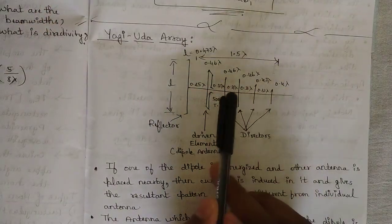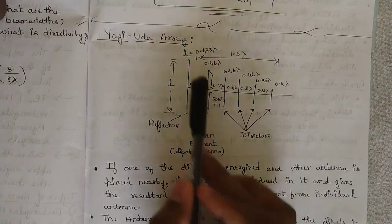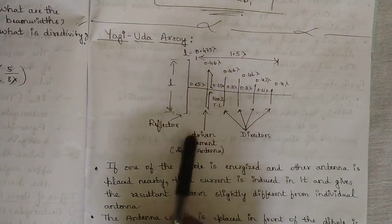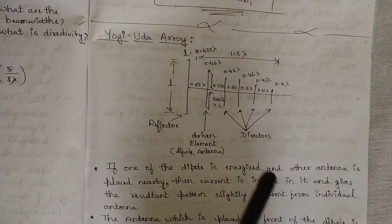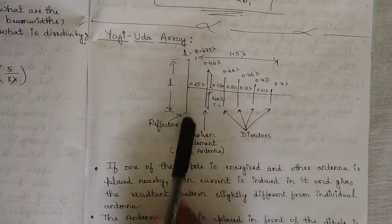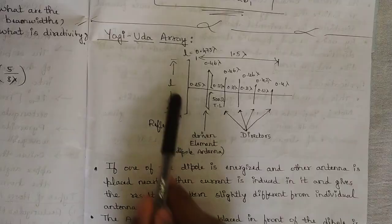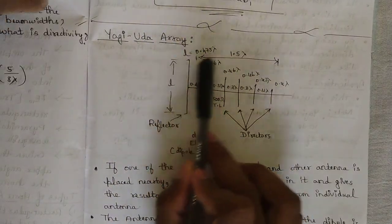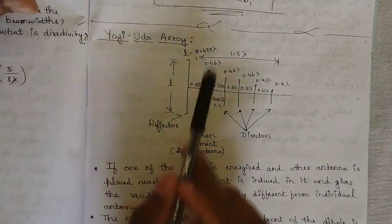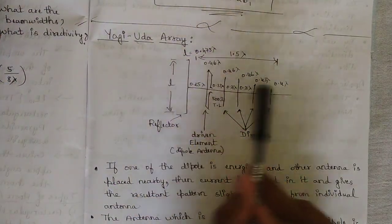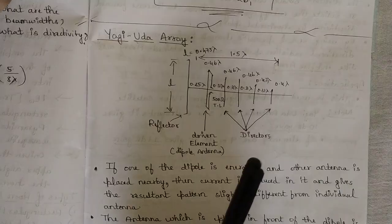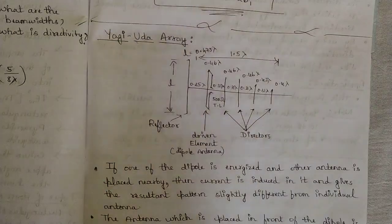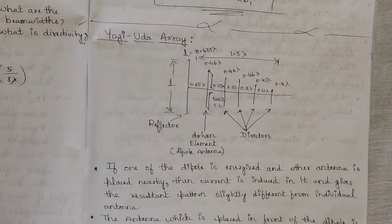The first element next to the directors is called the driven element or dipole antenna. The first big line is called the reflector, which has a fixed length of 0.475 lambda. The total length of the complete Yagi-Uda array in terms of wavelength is given as 1.5 lambda. This is the basic structure of the Yagi-Uda array — please note it down.